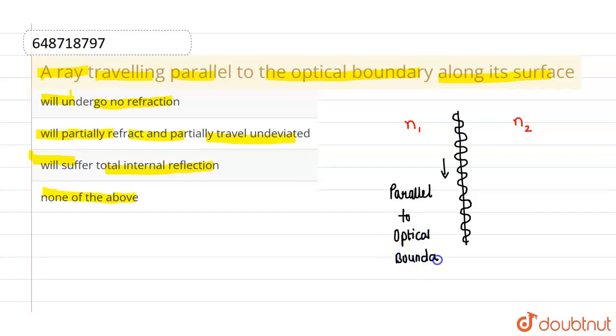Then in this case, it will partially refract and partially travel undeviated, because some of the part is in n1 and some of the part is in n2.